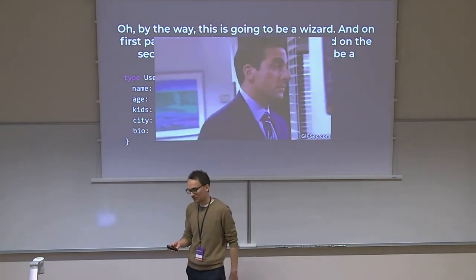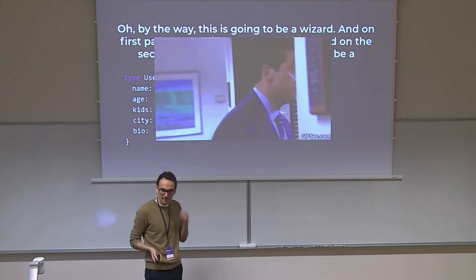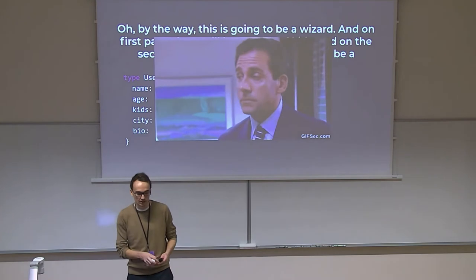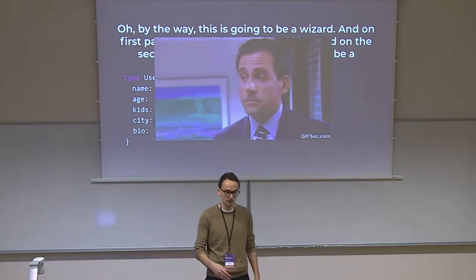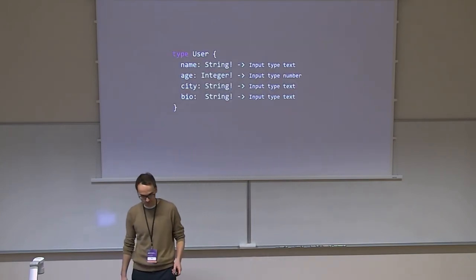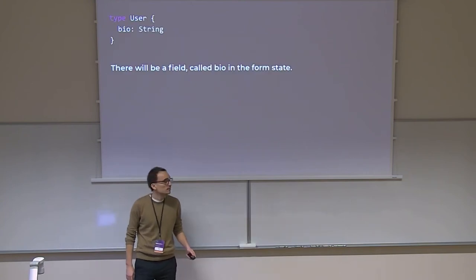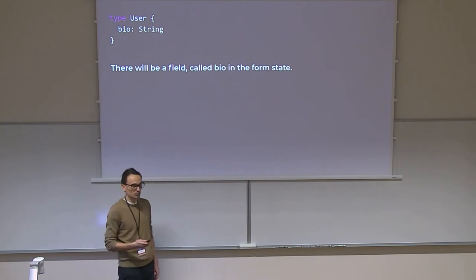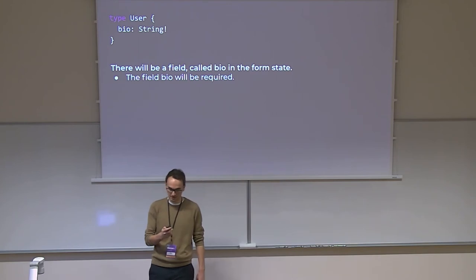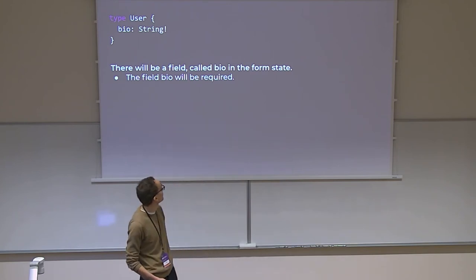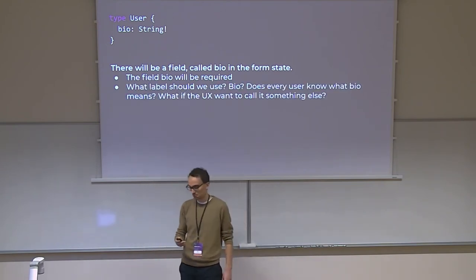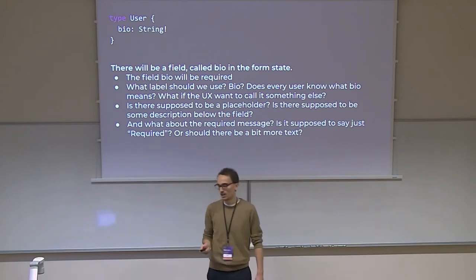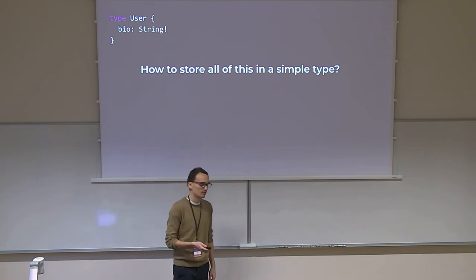With OpenAPI it's slightly easier — you get things like titles, read-only flags, and some attributes to hide fields — but at the end of the day you have the same issue. Look at the bio field from a UI perspective: there's nothing that tells you what to render or how to use it. The only things clear are the field name and, from the exclamation mark, that it's required. What about labels, placeholders, validation messages? How are you supposed to store all of that in just a simple data type?